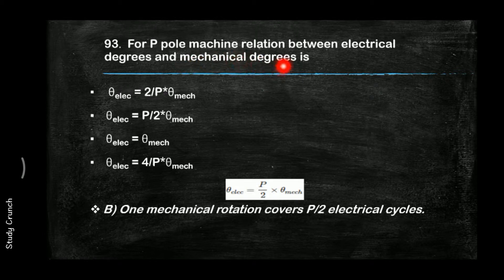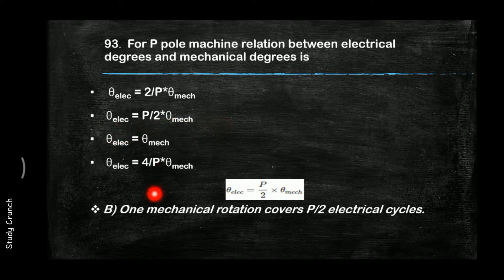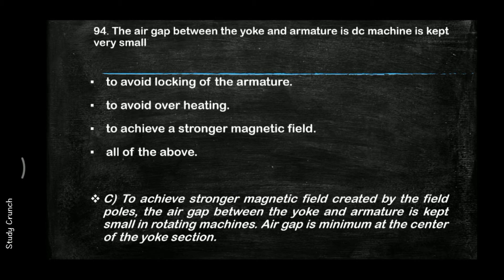For a P-pole machine, the relation between electrical degrees and mechanical degrees is: θ_electrical = (P/2) × θ_mechanical. One mechanical rotation covers P/2 electrical cycles.